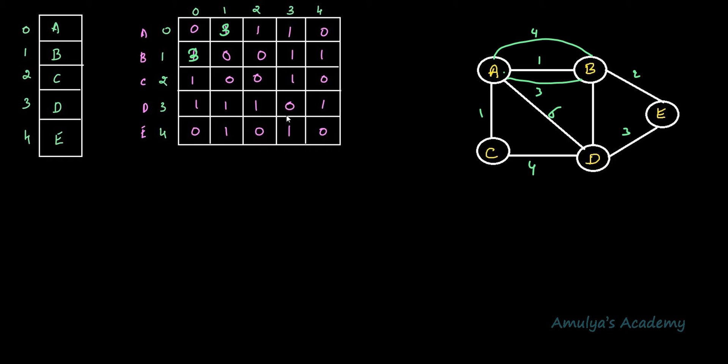When writing a program using adjacency matrix representation for a multiple edge graph, no changes are needed in the add node function, because adding a new node doesn't have any connection to the number of edges between nodes. But in the add edge function, instead of storing 1 when there is an edge between two vertices, you use a counter — initially zero. When there is a single edge, set it to 1; when you add a second edge between the same vertices, set the count to 2; add another edge and increment the counter.